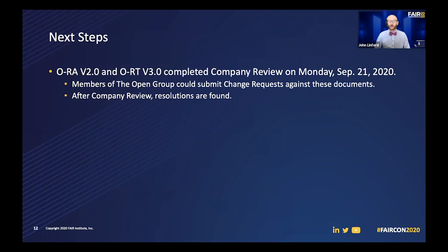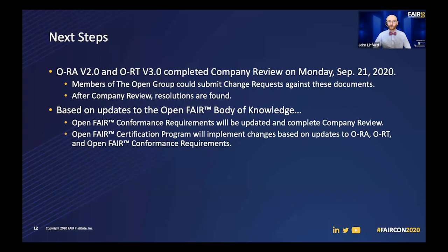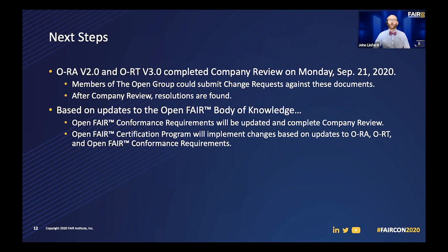What are our next steps? The new version of the Open Fair body of knowledge completed company review on Monday, September 21st. Company review within the Open Group allows individuals from any member organization to submit change requests against the documents. The sponsoring working group — in this case, the Open Fair working group in the Security Forum — then finds resolutions to these. It goes through another sanity review before getting executive review before publication. Once we have the new version of the body of knowledge published, we'll look at updating the conformance requirements based on those changes, which will also complete company review. We'll then work through updating the actual certification program itself based on changes to ORA, ORT, and the conformance requirements. At that point, we'll be able to work with our organizations offering accredited training courses to ensure everything is up to date. Thank you very much for watching my presentation on updates to the Open Fair Standard and next steps to the certification program. I hope you all enjoy the rest of the conference.